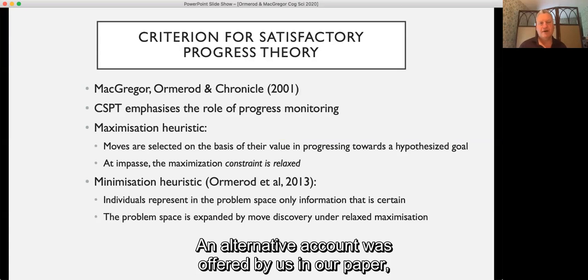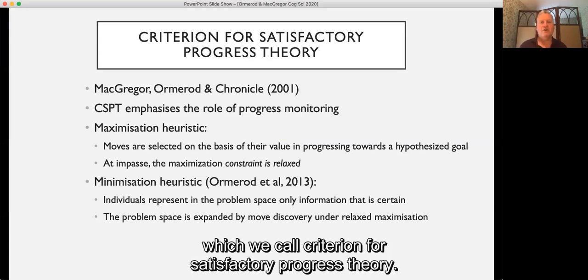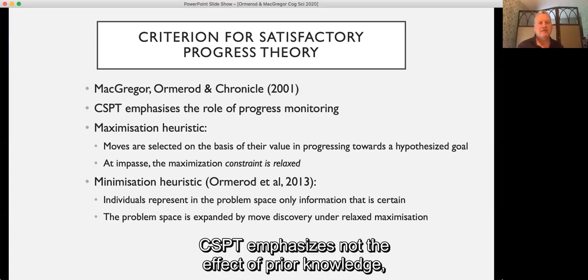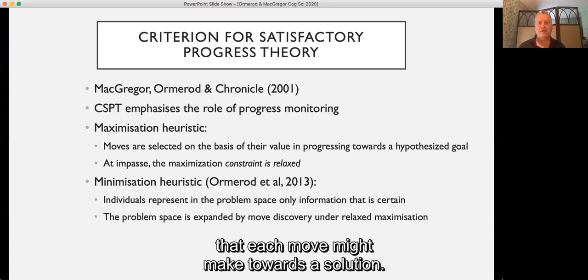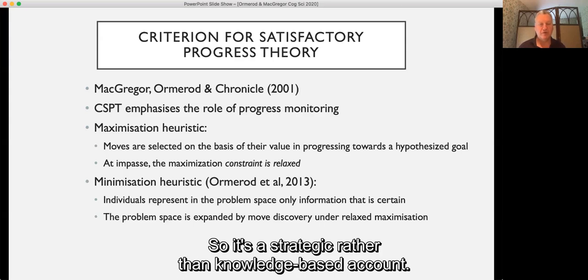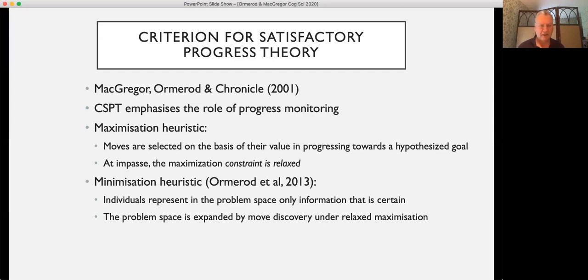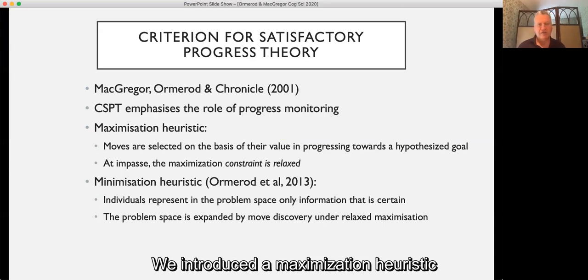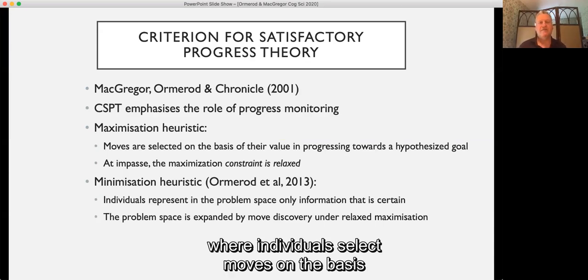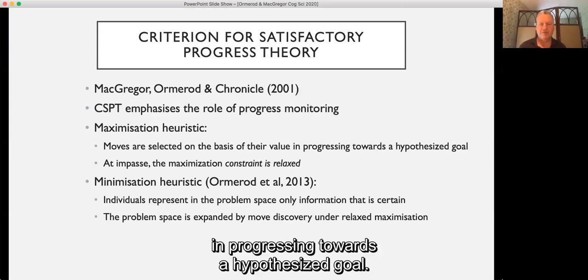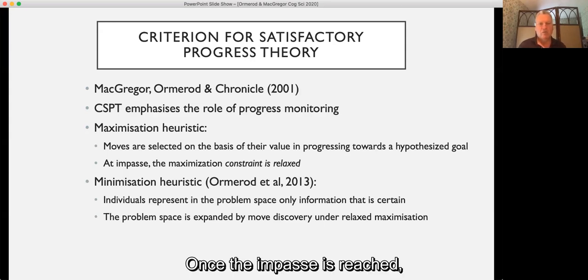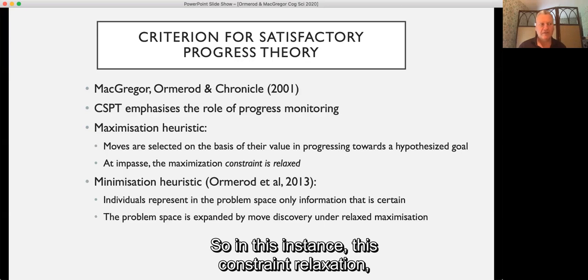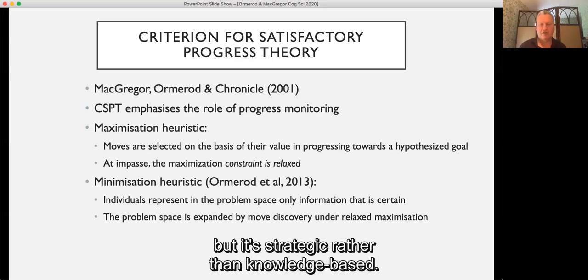An alternative account was offered by us in our paper, which we call Criterion for Satisfactory Progress Theory. CSPT emphasizes not the effect of prior knowledge but the role of monitoring the progress that each move might make towards a solution. So it's a strategic rather than knowledge-based account. We introduced a maximization heuristic where individuals select moves on the basis of the value that they appear to make in progressing towards a hypothesized goal. Once impasse is reached, the maximization constraint is relaxed. So in this instance there's constraint relaxation, but it's strategic rather than knowledge-based.